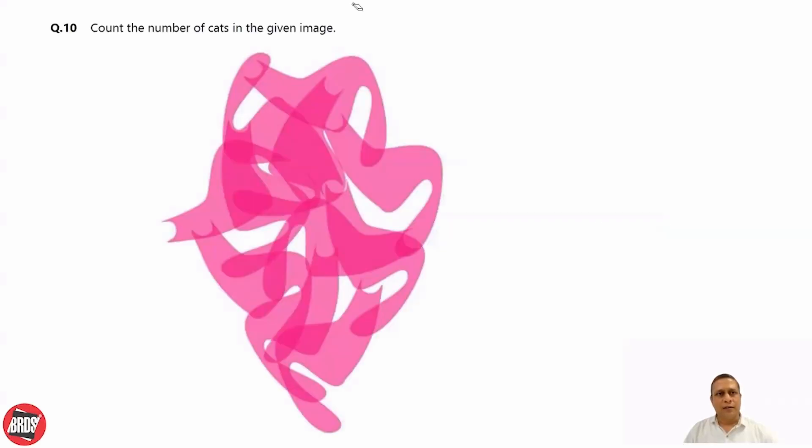Count the number of cats in the given image. See, cats are overlapping. So you just consider one particular part of the cat.